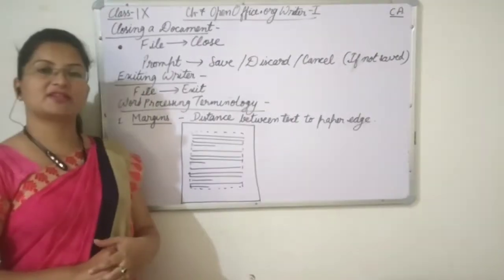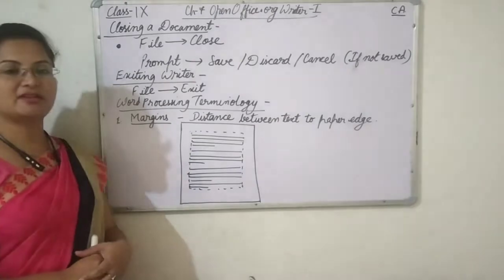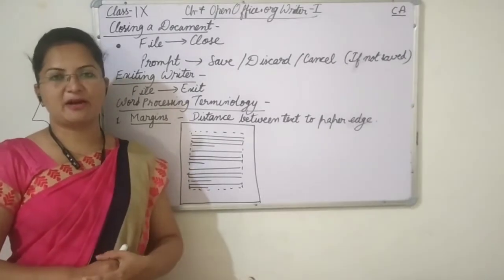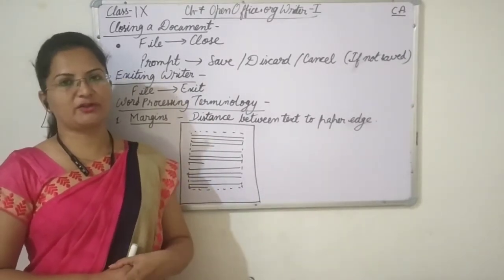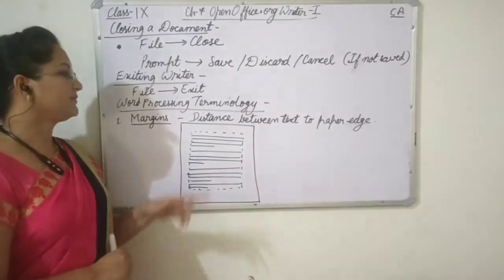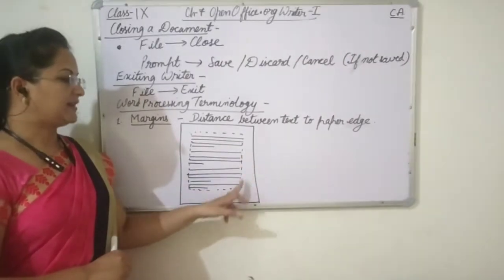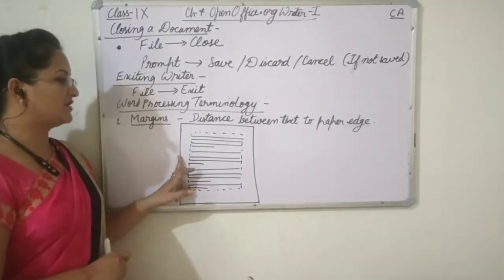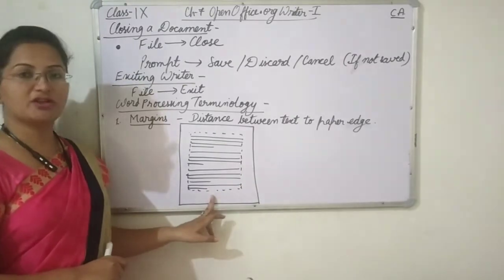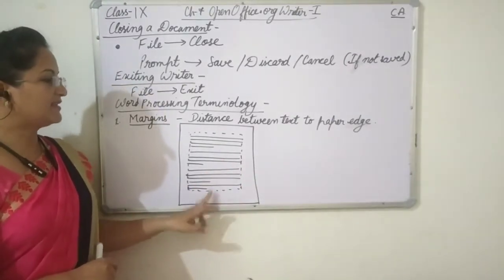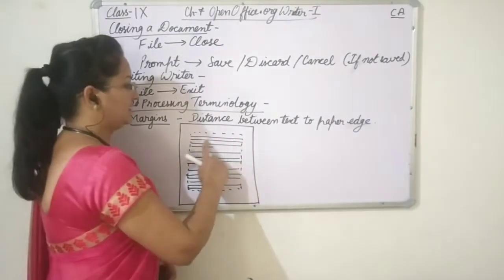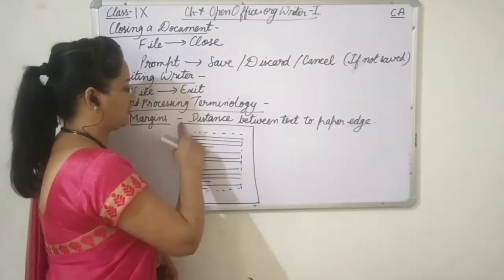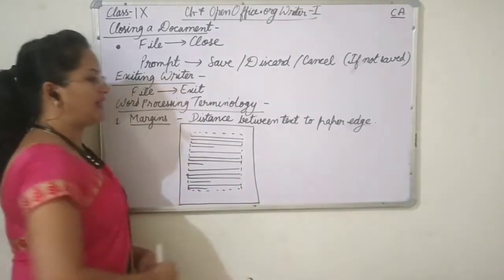Now we will study about some word processing terminologies. There are some important words we should know in Writer. The first is margin. You might have seen margins in your notebook — there is a left margin, right margin, top margin, and bottom margin. Whenever we prepare a document, it is automatically arranged with some margins. Margin means the distance between the text and the paper edge. You can see the text is written with a gap between the text and the paper edge — this space is known as margin.